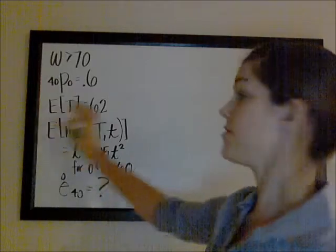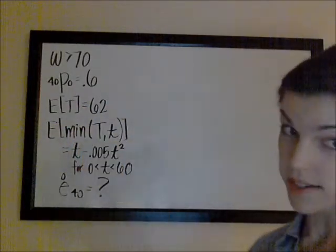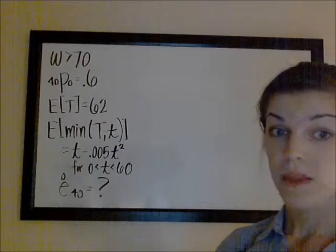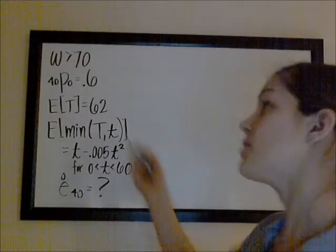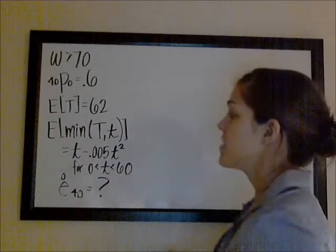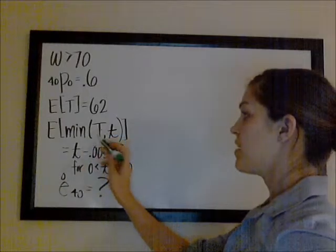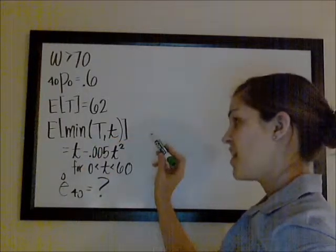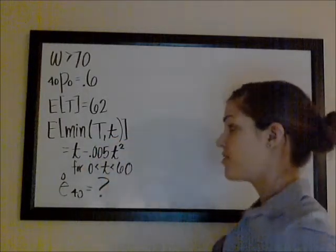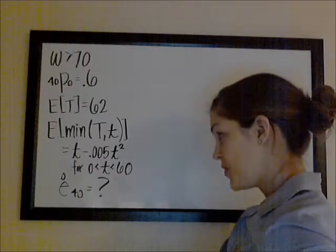The expected value of t, which they tell us is the future lifetime random variable for 0, so the complete expectation of life, is 62 years. Then they give us that the expected value of the minimum of t and some value t is t minus 0.005t squared for t between 0 and 60.